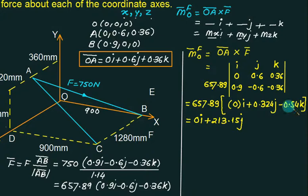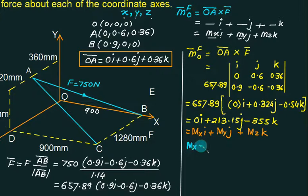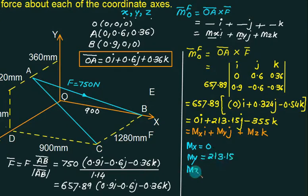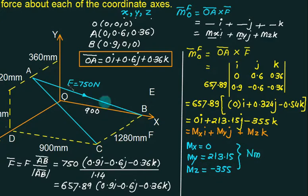After computing the cross product and multiplying 657 by 0.324 and 0.54 by 6, our results are: moment about X axis = 0, moment about Y axis = 213 N·m, and moment about Z axis = −355 N·m.